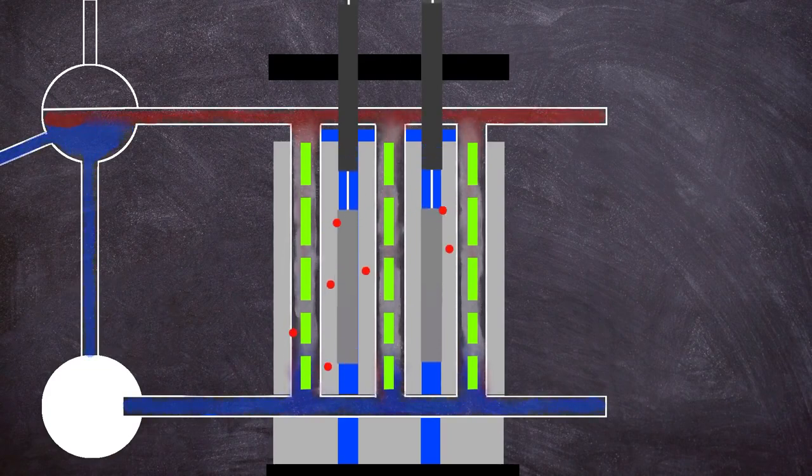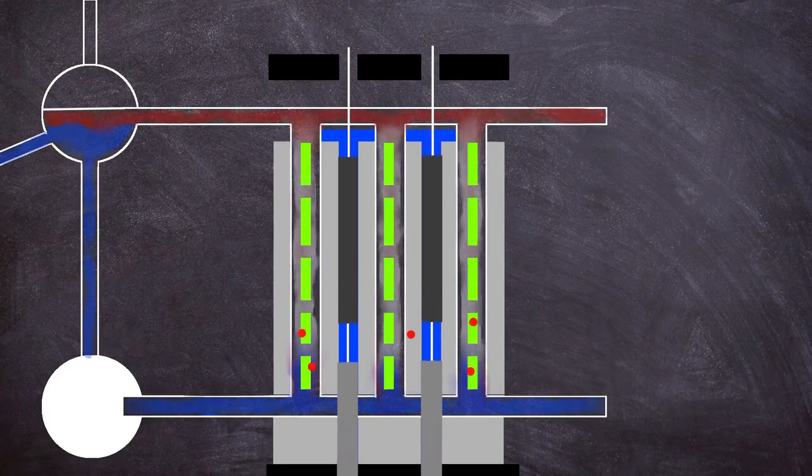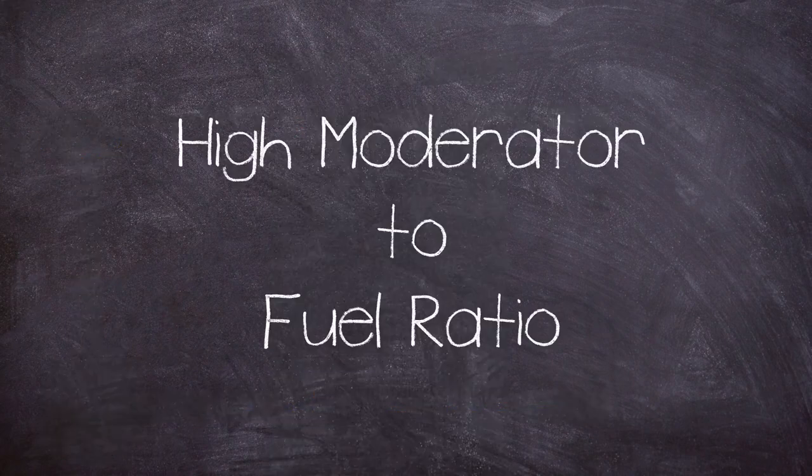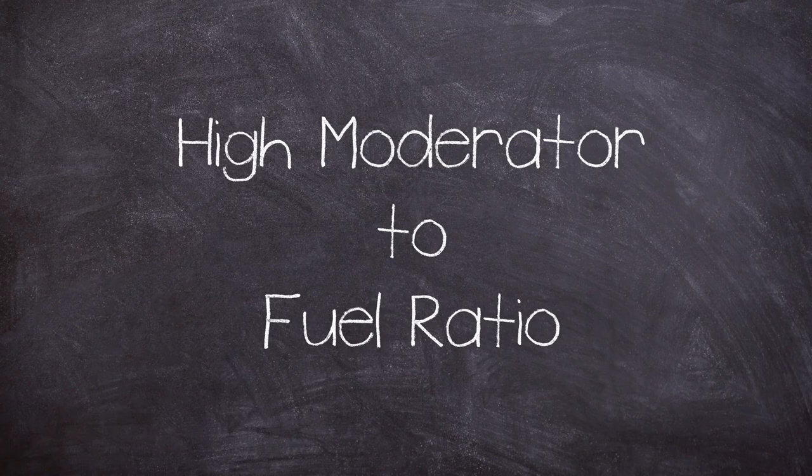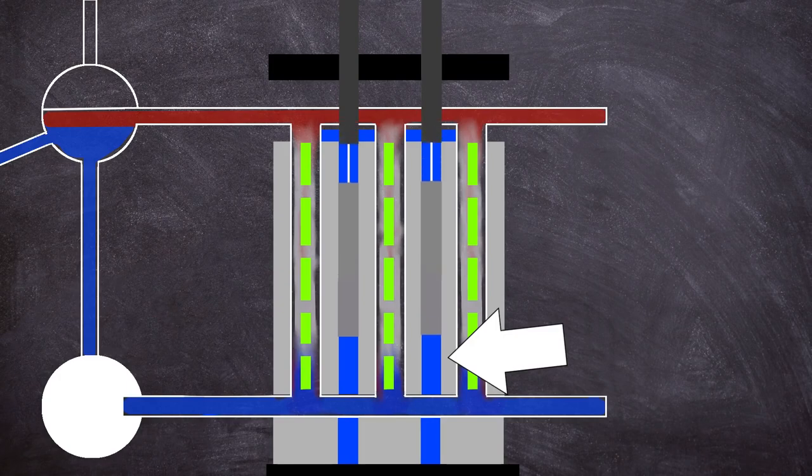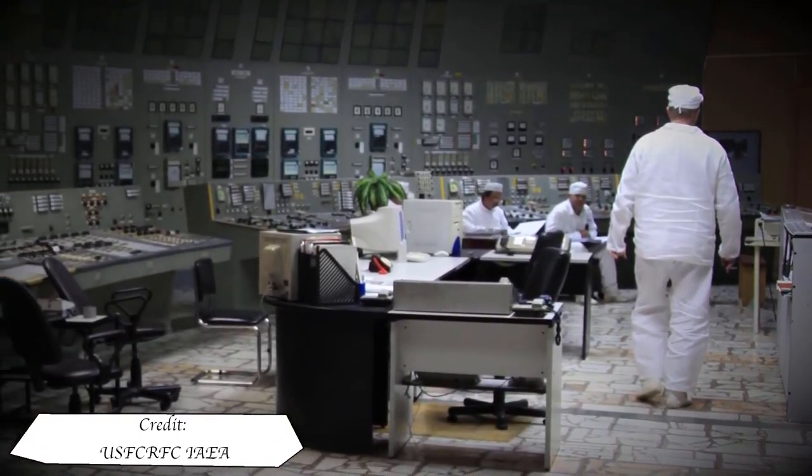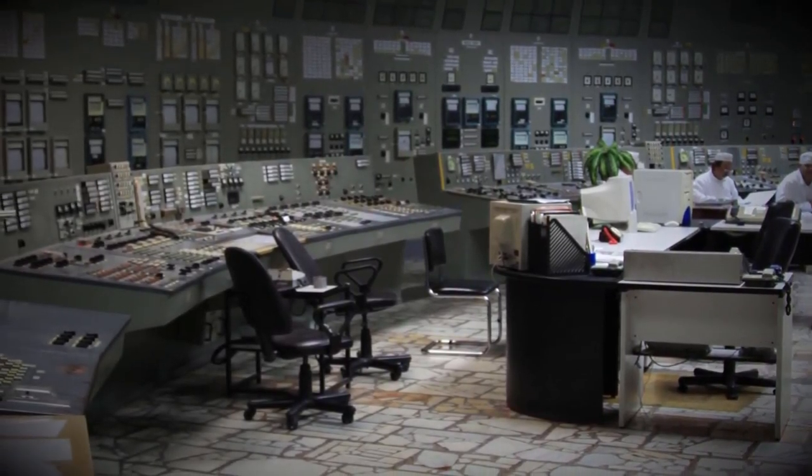On receipt of a scram signal causing a fully withdrawn rod to fall, water was displaced from the lower part of the channel as the rod moved downwards. This caused a localized insertion of positive reactivity in the lower part of the core. This was because the RBMK had a high moderated to fuel ratio, meaning the lower part of the core would experience a spike in reactivity as the graphite displacer entered it, replacing the neutron absorbing water with neutron moderating graphite. But this situation was only dangerous at certain power levels of the reactor, which was meant to be mitigated by the knowledge and training of the operators and importantly by their management.